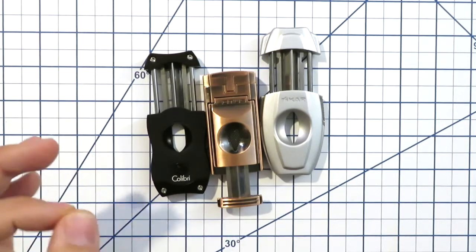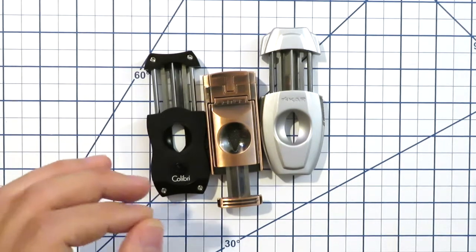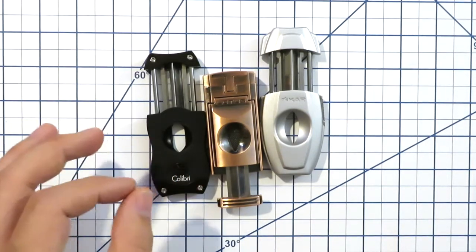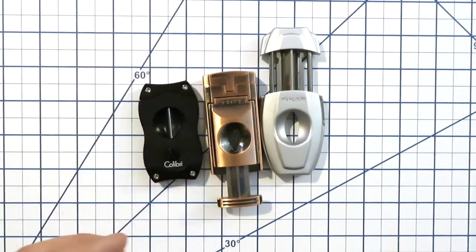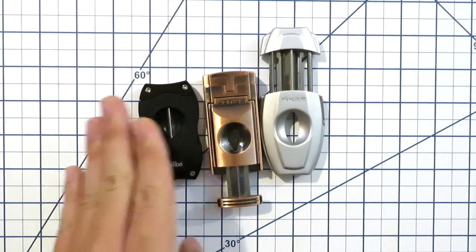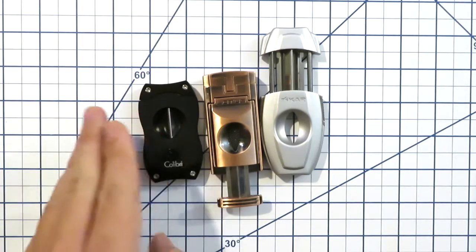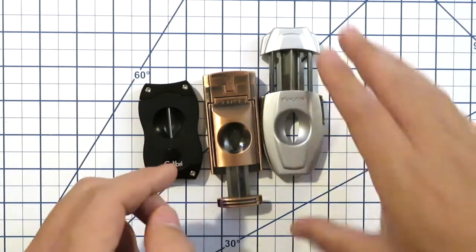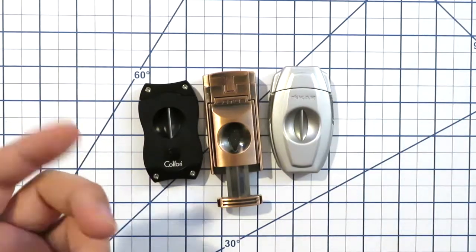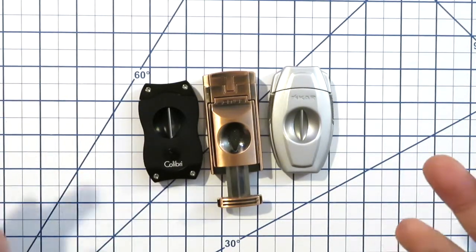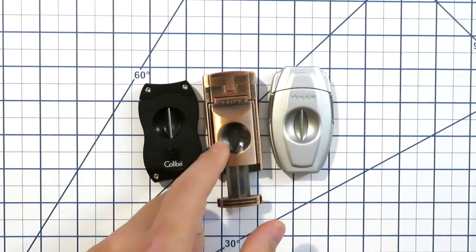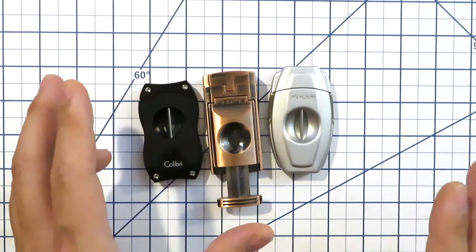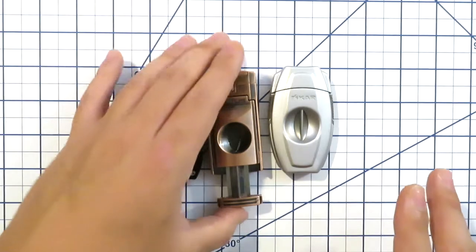This V cutter, I'll tell you anything over 54, it's almost like you're going to have to do two parallel cuts to be honest, to get a nice draw compared to what you might be used to if you're using something like the Calibri or the Xikar or even those cheaper two, three dollar plastic ones. They give you a little bit more of a generous ring size for your cuts.